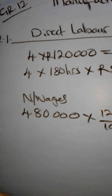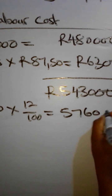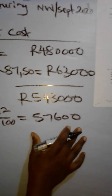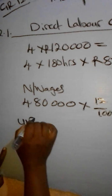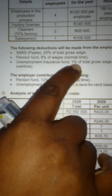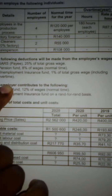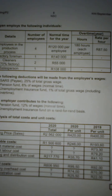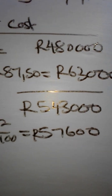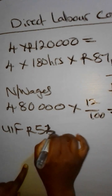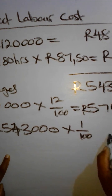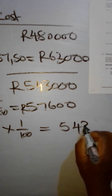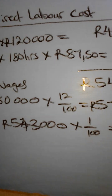The pension fund calculation: R480,000 normal wages times 12% gives us R57,600. That is the employer's pension fund contribution. For the UIF, it is on a rand-for-rand basis, meaning the employer also contributes 1%. So R543,000 total gross wages multiplied by 1% gives us R5,430.